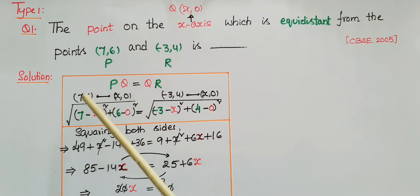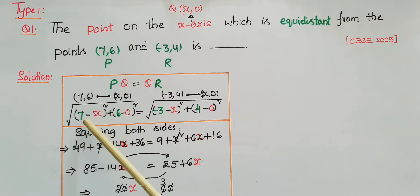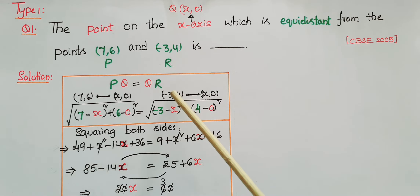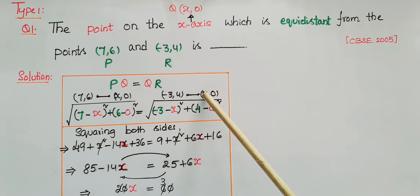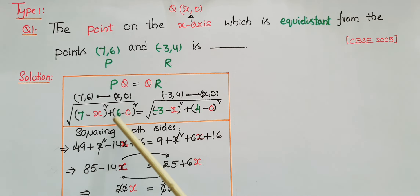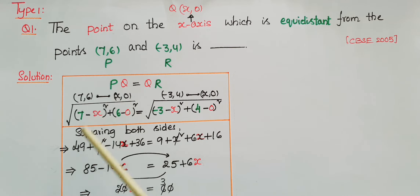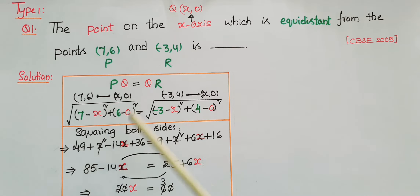P is (7, 6), so the distance from (7, 6) to (x, 0) is square root of (7 minus x) whole square plus (6 minus 0) whole square. That equals square root of (-3 minus x) whole square plus (4 minus 0) whole square. Squaring both sides: (7 minus x) whole square is in the form (a minus b) whole square, giving 49 plus x squared minus 14x, plus 6 squared which is 36.